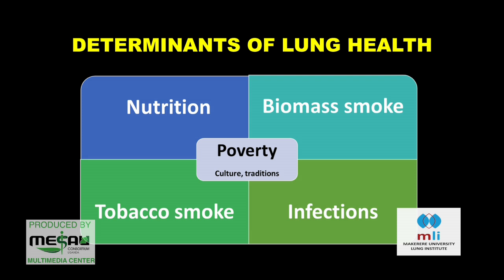And of course, traditions — cooking traditions and different things. As we try to think through interventions for these major four determinants, deep down there are things to do with culture, with traditions, with poverty, which we must also address if we are to tackle those big figures.